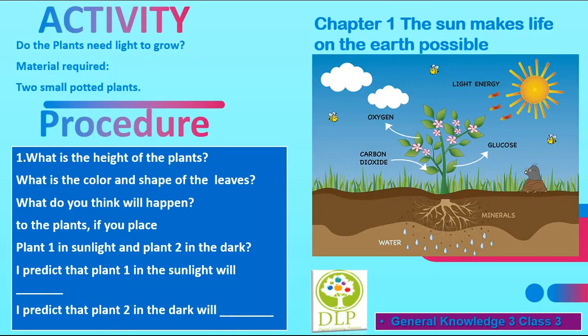Activity: Do the plants need light to grow? Materials required: 2 small potted plants. Procedure: Observe the height, color, and shape of the leaves of both plants. What do you think will happen if you place plant 1 in sunlight and plant 2 in the dark? I predict that plant 1 in the sunlight will grow, and plant 2 in the dark will not grow.